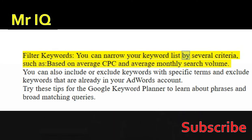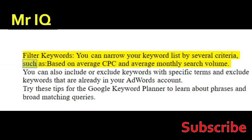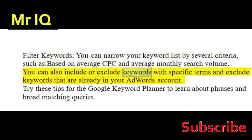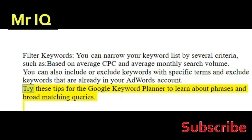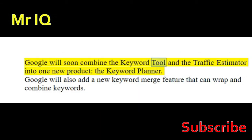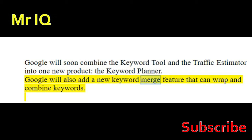You can narrow your keyword list by several criteria, such as average CPC and average monthly search volume. You can also include or exclude keywords with specific terms and exclude keywords that are already in your AdWords account. Try these tips for the Google Keyword Planner to learn about phrases and broad matching queries. Google will soon combine the keyword tool and the traffic estimator into one new product, the Keyword Planner, and will also add a new keyword merge feature that can wrap and combine keywords.